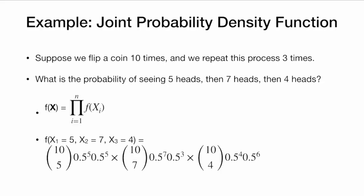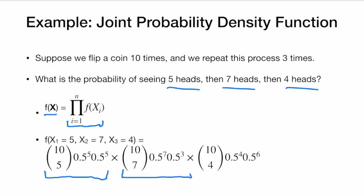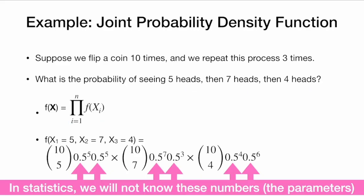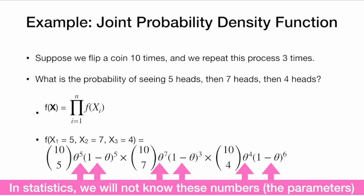For example, suppose that we flip a coin 10 times and repeat this process 3 times — so we're flipping the coin 30 times in all, in groups of 10. What is the probability that we see 5 heads in the first set of 10 flips, then 7 heads in the second set, and then 4 heads in the third set? Well, the probability is simply those 3 events multiplied by each other. We might recognize the binomial distribution here. In statistics, we will usually not know these numbers — we will not know that we have a 50-50 coin. We will want to learn about the probability of success, so those will just be theta, an unknown parameter that we do not know.